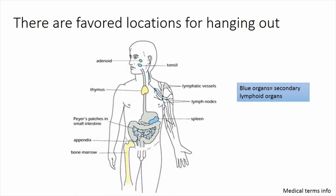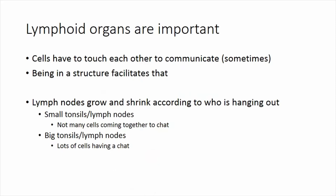These lymphoid organs are really important for where the cells come together to have a conversation. The cells don't like to operate independently—they have to come together and communicate in order to optimally defend against infections. Those lymphoid organs are where that all takes place. Having a structure where the cells can be facilitated to come together and communicate is really important—that's the concept behind these lymphoid organs.